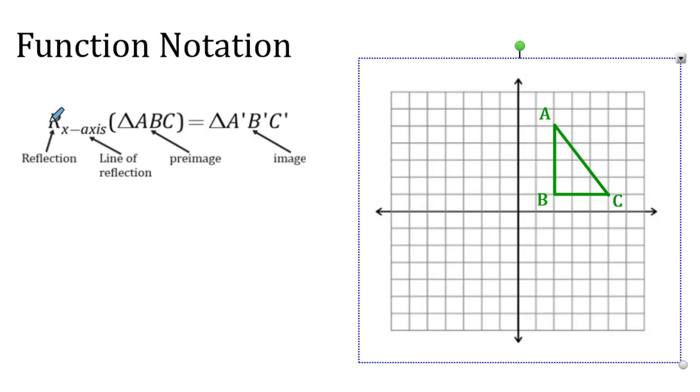You have the reflection, which we represent with a big uppercase R, over the line of reflection, which in this case is the x-axis, and you got the pre-image that you're flipping, which will result in the image. So here we have the pre-image, which is this part here.